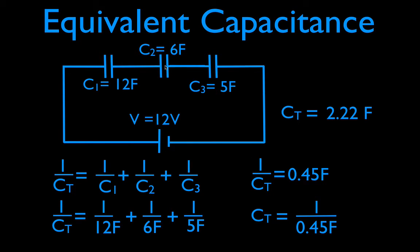That is how you calculate the equivalent capacitance for capacitors in series. You simply can't add them up — you can't just add 12, 6, and 5. That's how you do it for capacitors in parallel. For capacitors in series, just like for resistors in parallel, you have to use what I call the 1 over equation: 1 over the equivalent equals 1 over C1, plus 1 over C2, plus 1 over C3. Remember, this gives you 1 over CT, so take the reciprocal of both sides to get 2.22.